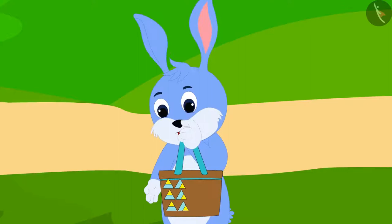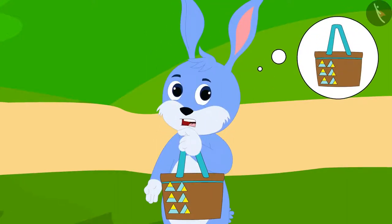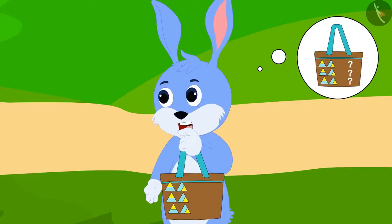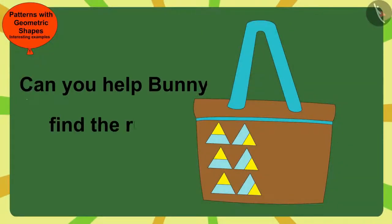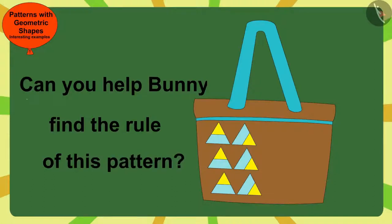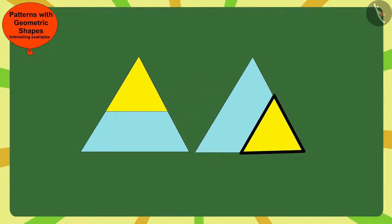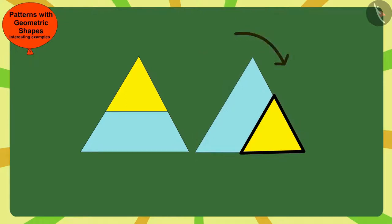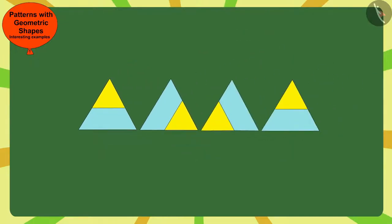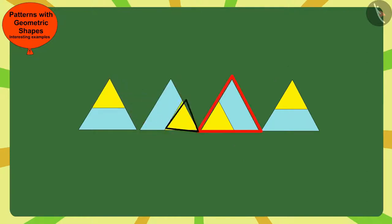What rules has Gagu used to make this pattern? Bunny is thinking. Children, can you help Bunny find the rule of this pattern? Here, Gagu has made the small triangle from the previous mark in the next corner of the big triangle in the clockwise direction. In this way, every time Gagu made this pattern by moving this small triangle clockwise to the next corner of the big triangle.